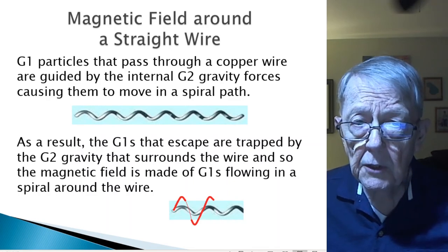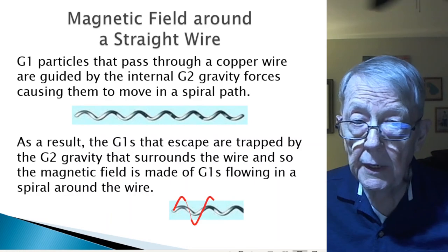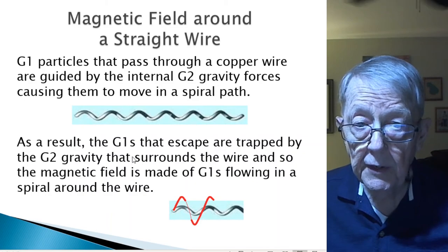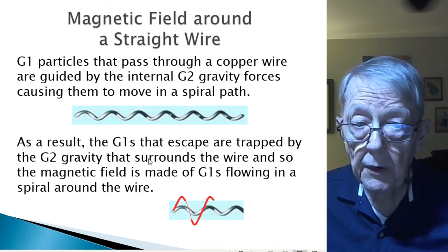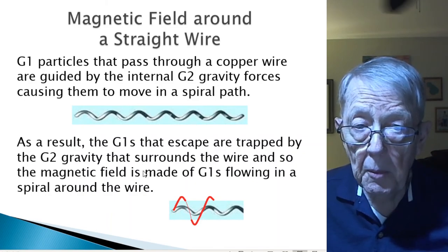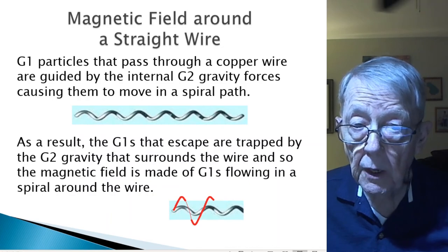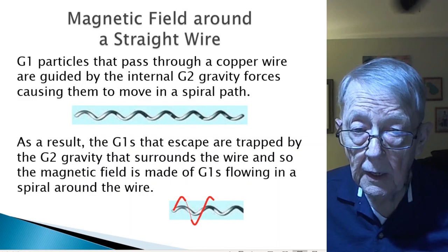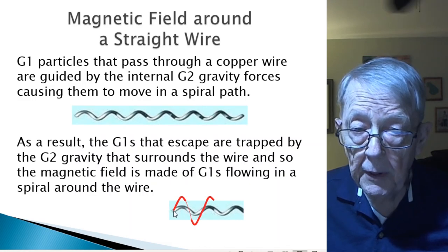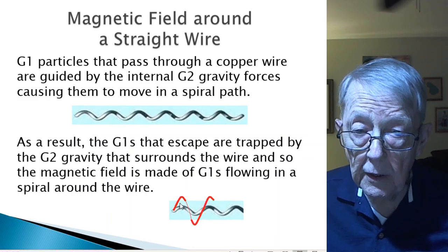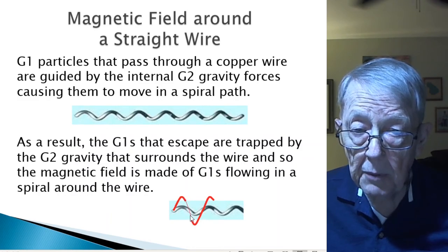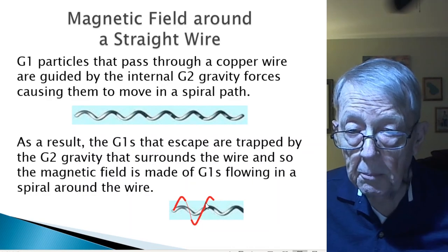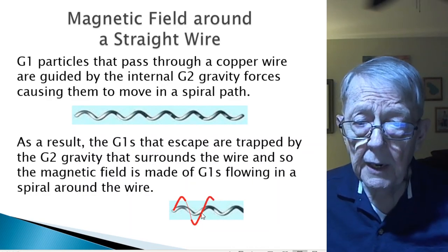But as a result of it going through in a spiral, the G1s escape and are trapped by the same G2 gravity that surrounds the wire. And so the magnetic field is made of G1s flowing in a spiral around the wire.